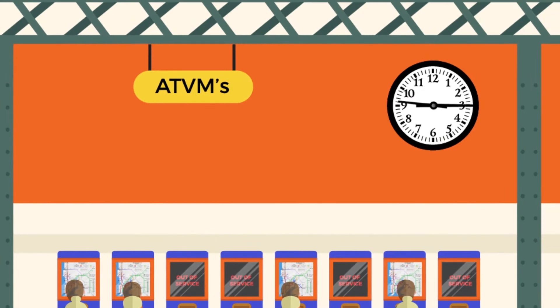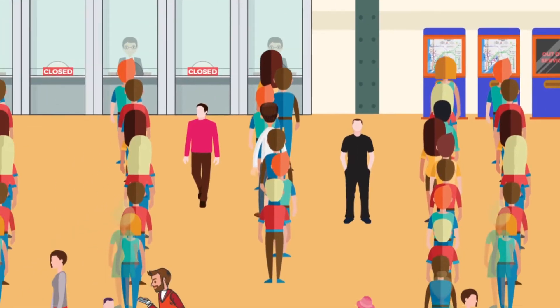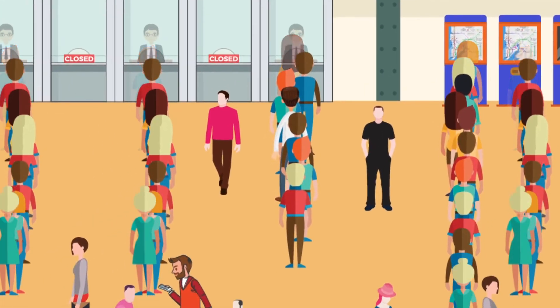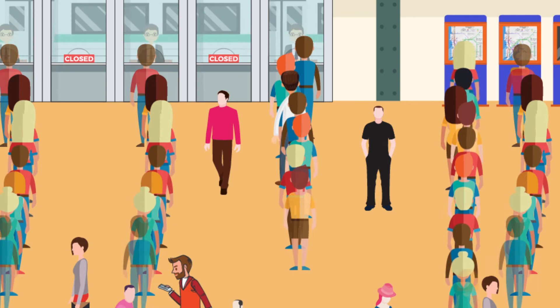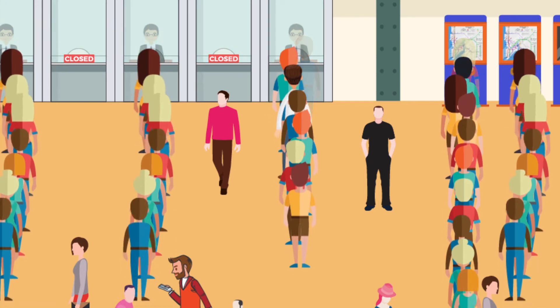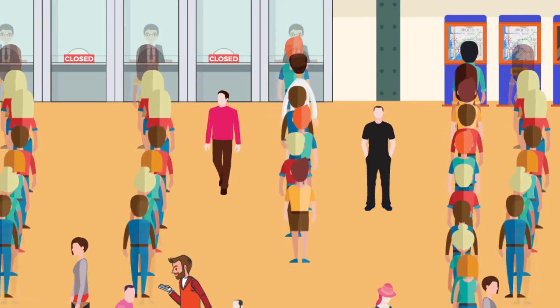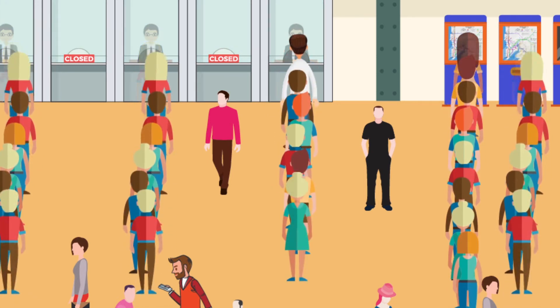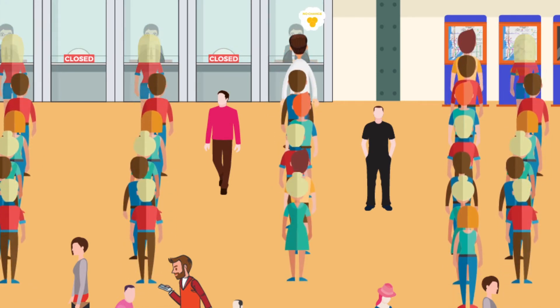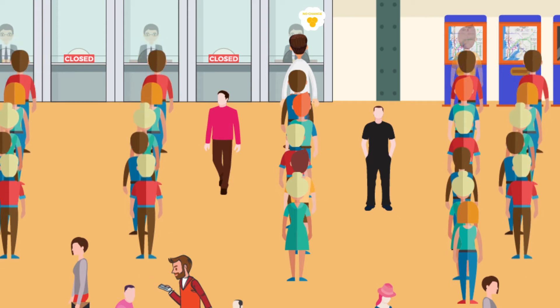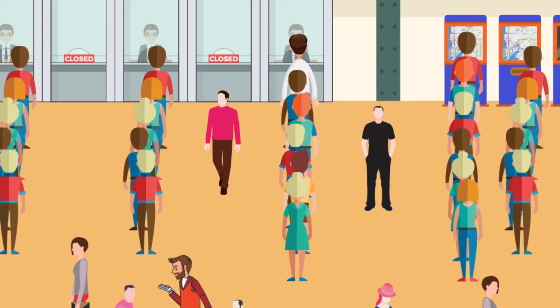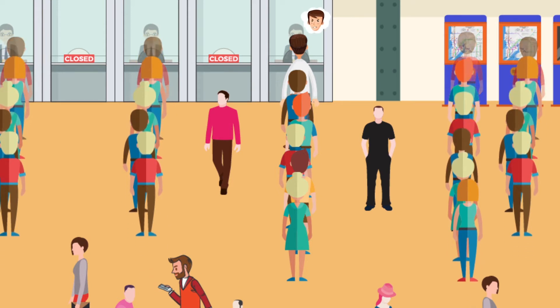15 minutes passed away. Amrit missed two trains and is still waiting in the queue. After 20 minutes, Amrit got his turn but he has no change to pay, which makes him very angry and sad.